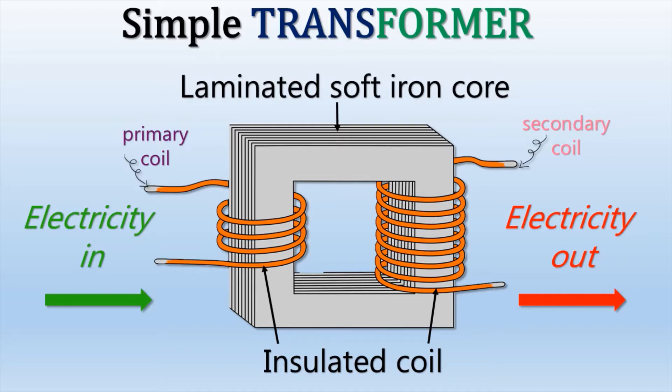The iron core has the function of guiding almost all the magnetic field lines to pass through the secondary coil.